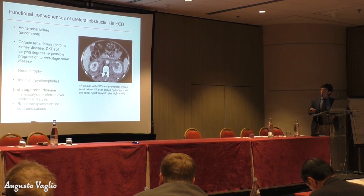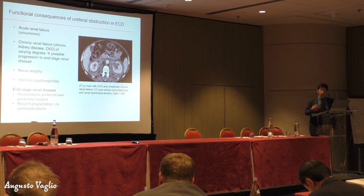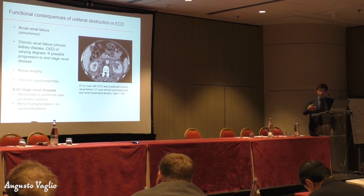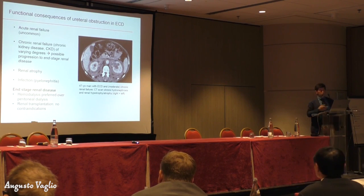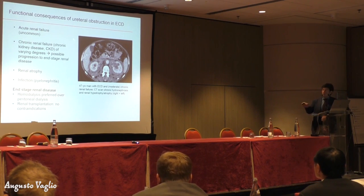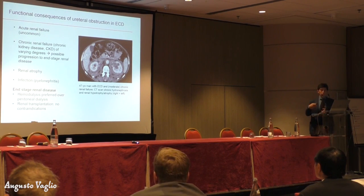What are the consequences of ureter obstruction in ECD? The kidneys can fail suddenly — this is what we call acute renal failure — but this is quite uncommon in patients with ECD, probably because the process is very insidious and slowly progressive. So what we have in most cases is a kind of chronic renal disease of varying degrees, because we can have a serum creatinine — which is our marker for renal function — which is just slightly elevated, or we can have progression to end-stage renal disease.